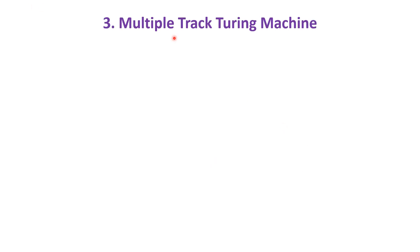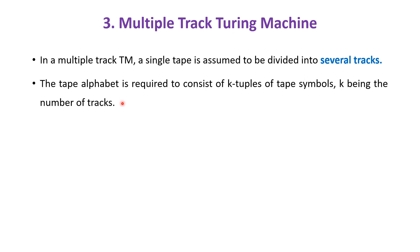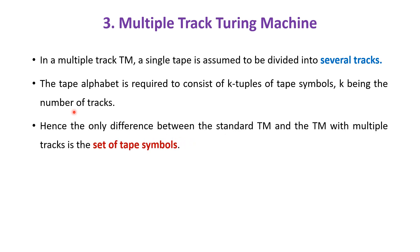The third technique is multiple track Turing machine. In this machine, a single tape is assumed to be divided into several tracks. The tape alphabet is required to consist of k-tuples of tape symbols, k being the number of tracks. Hence the only difference between the standard Turing machine and the Turing machine with multiple tracks is the set of tape symbols.